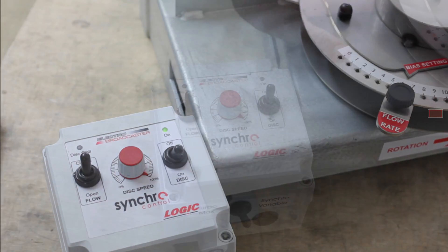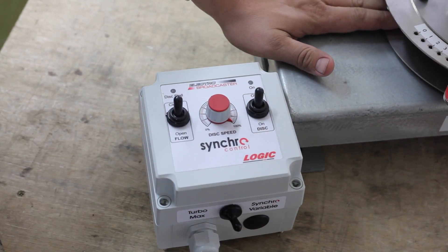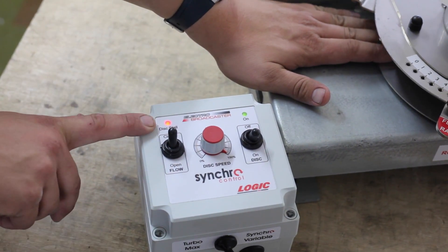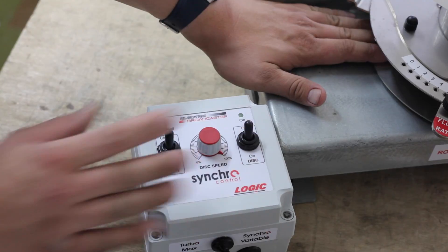Here is the bench test of the synchro electro-broadcaster, showing the options available to the user of this model. Firstly, there is a disc stall light, which shows there is a start-up problem with the machine.